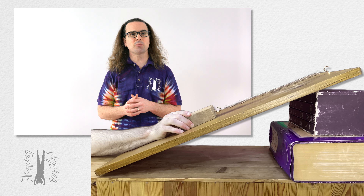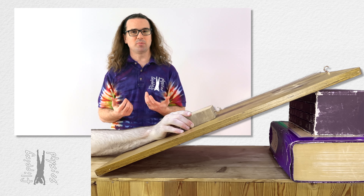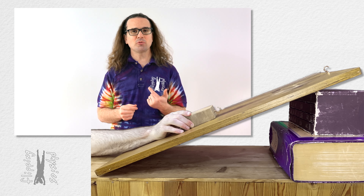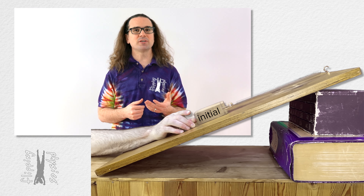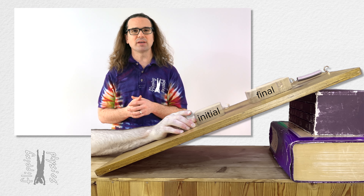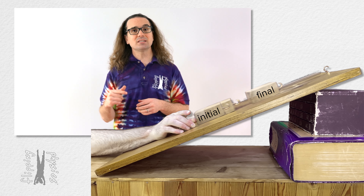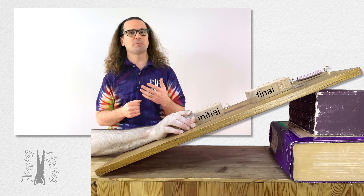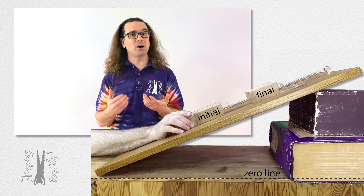A block which is attached to a spring slides up an incline. I wanted something simple — a block attached to a spring sliding up an incline seemed pretty simple. Let's define the initial point after the block has started moving and set the final point before the block has stopped moving and before the block reaches the equilibrium position of the spring. And let's set the horizontal zero line at the bottom of the incline, so the block is always above the zero line.